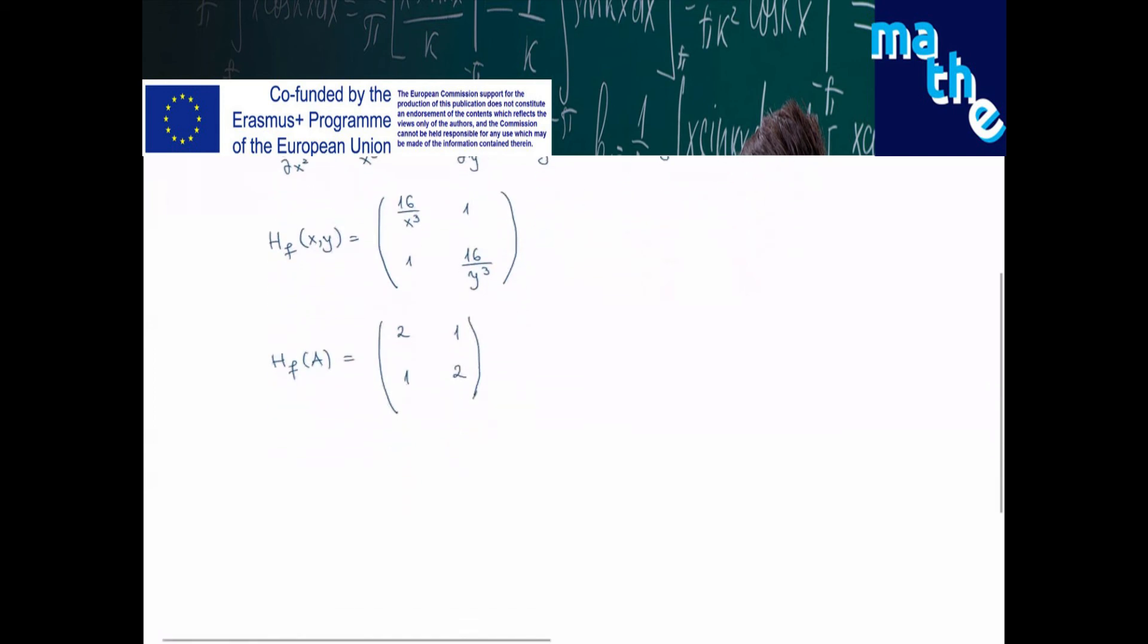And for instance, using the Jacobi standard procedure to see if this matrix is positively definite, we have delta 0 equal to 1, delta 1 equal to the determinant of this element, which is exactly 2, and delta 2 the determinant of the Hessian matrix, and this is 3.